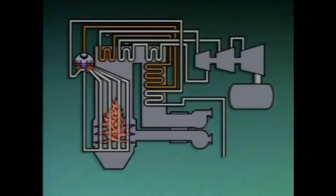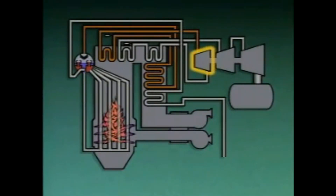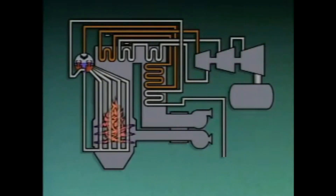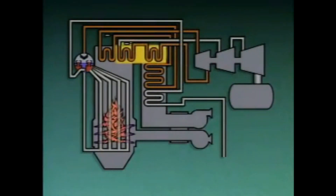From the secondary superheater, the steam goes to the high-pressure, or HP, section of the turbine. As the steam flows through the HP section, it gives up a lot of its energy and its temperature and pressure drop. Before it moves on to the other sections of the turbine, the steam returns to the boiler, where its temperature is increased as it flows through one or more reheaters.